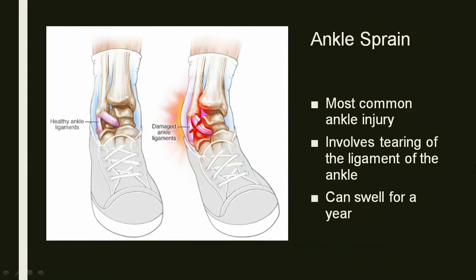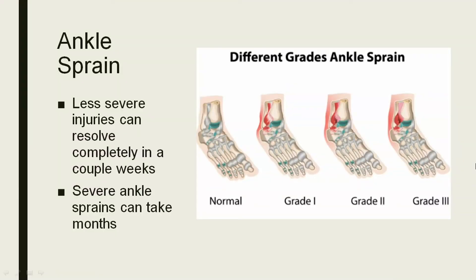Definitely the most common injury around the foot and ankle is an ankle sprain — I see these multiple times a day. There are multiple grades. It involves tearing, most of the time, on the outside of the ankle — you tear some of the ligaments. This can range from just a slight stretch to a complete tear. People are often surprised at how long you can swell from just an ankle sprain — it can be six months to even a year. With less severe ankle sprains, usually by a couple of weeks you can get back to normal and playing sports. For the more severe ones, it can take months.